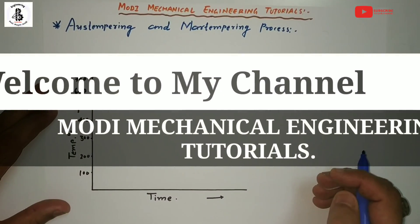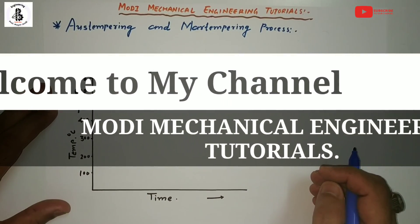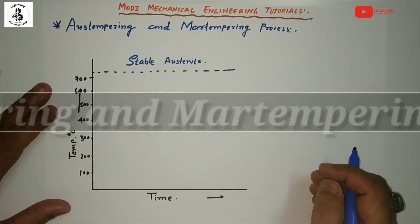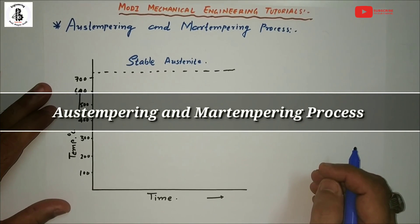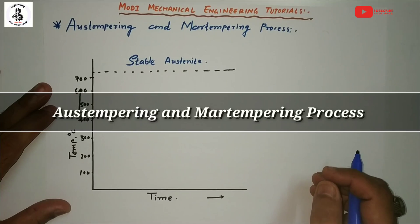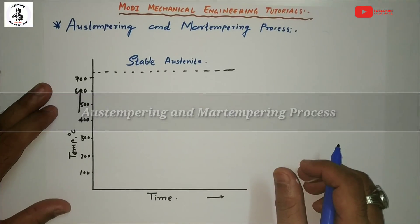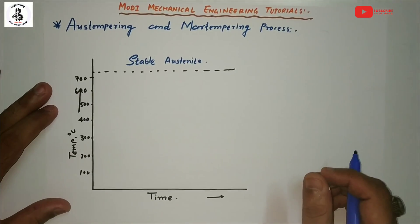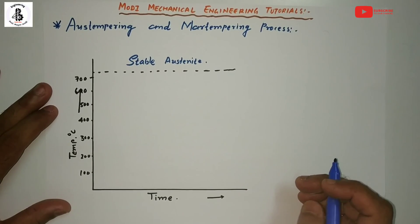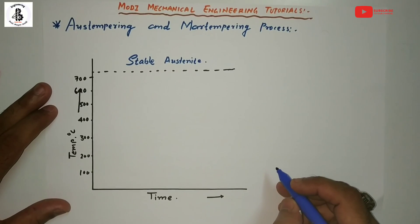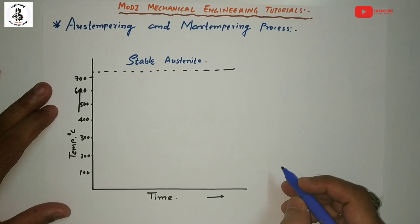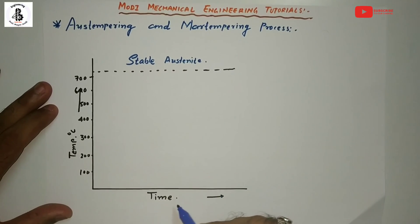Welcome to my YouTube channel Modi Mechanical Engineering Tutorials. In this video I would like to explain some special kind of heat treatment processes — austempering and martempering. We will be discussing these processes with their features using the TTT diagram.